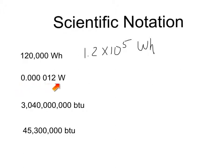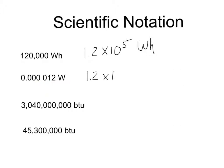We're not going to deal with many really small numbers in this class, but I'll do an example anyway. In this case, we need one non-zero number to the left of the decimal point. The decimal starts here and we move it over between the one and the two, but this time we go to the right — one, two, three, four, five places. So this time it's 1.2 times 10 to the negative fifth watts.